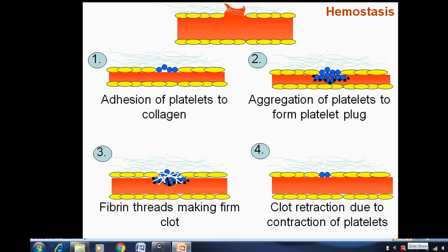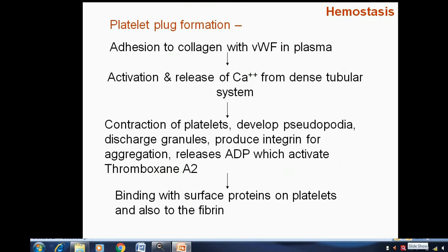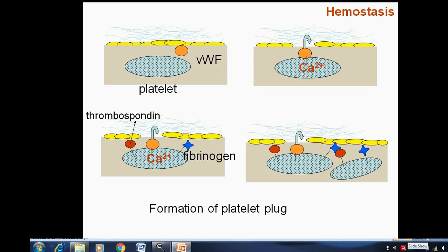The process of platelet plug formation proceeds in sequence: adhesion to collagen via von Willebrand factors in plasma causes activation and release of calcium from the dense tubular system, followed by contraction of platelets, development of pseudopodia, discharge of granules, production of integrin for aggregation, release of ADP which activates thromboxane A2, causing binding with surface proteins on platelets and also to fibrin. This is the schematic presentation of platelet plug formation.